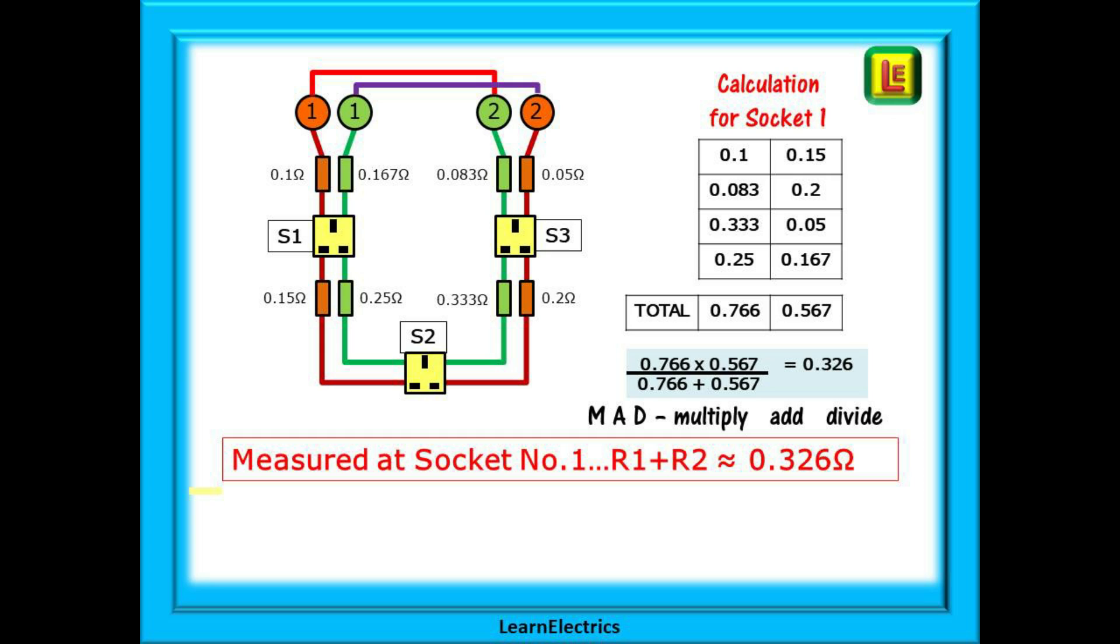Now the easy bit. Multiply these two numbers together. Then add them together and then divide the first by the second. Pause the video and do the maths yourself. If we do this properly we should get about 0.326 ohms for R1 plus R2, depending on how we round up or down.